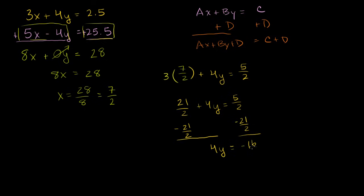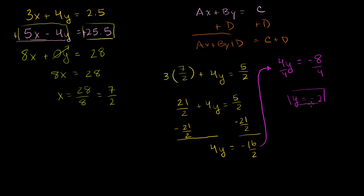Continuing: 4y equals negative 8. Divide both sides by 4, and we get y equals negative 2. So the solution to this system is x equals 7 halves, y equals negative 2. This is the coordinate of their intersection.